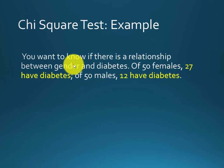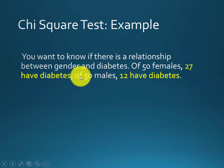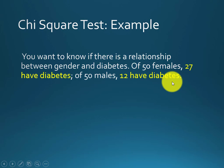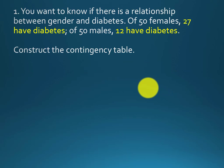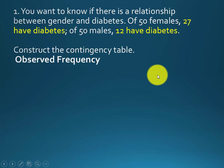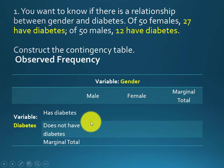Here is an example we'll do by hand calculation. A researcher wants to know the relationship between gender and diabetes. She collected data from 50 males and 50 females. Out of 50 females, 27 had diabetes, and out of 50 males, 12 had diabetes. The first step is to construct a contingency table from this data.